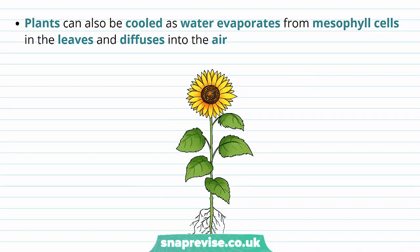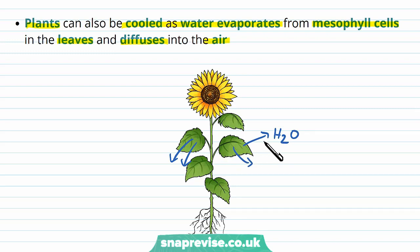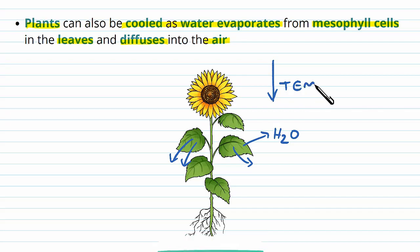This is also useful in plants, because they can be cooled as water evaporates from the mesophyll cells in the leaves and diffuses through the stomata into the air. This process is called transpiration, and if the water is leaving the leaves from the mesophyll area, it takes that energy with it as those bonds get broken, and therefore the temperature of the plant can decrease.